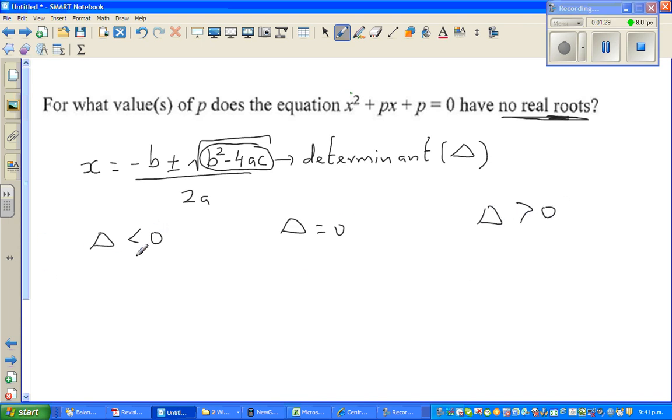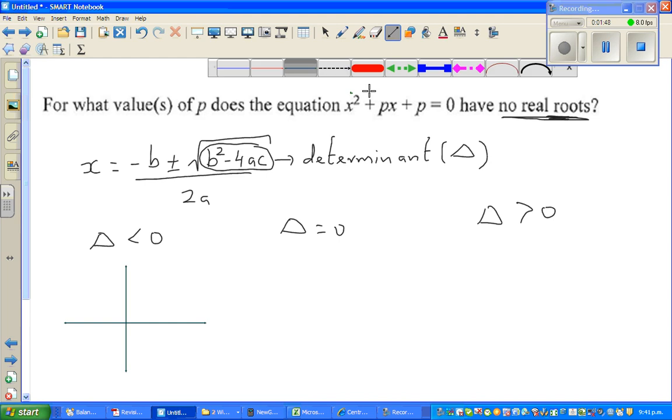If delta is less than 0, you are finding square root of a negative number. In real numbers, you cannot find square root of a negative number. So if you graph that equation where delta is less than 0, your parabola would be going something like this, or it can also go upside down.